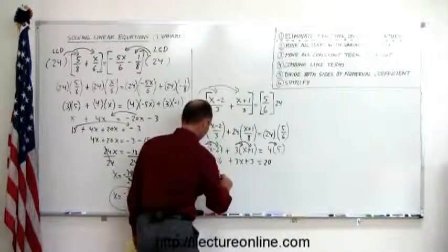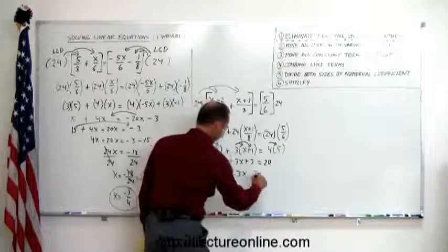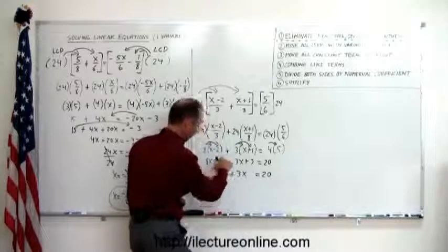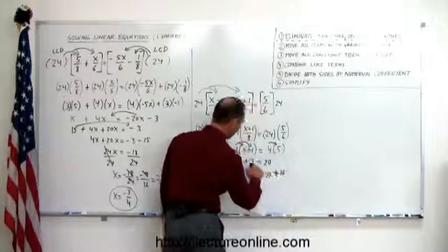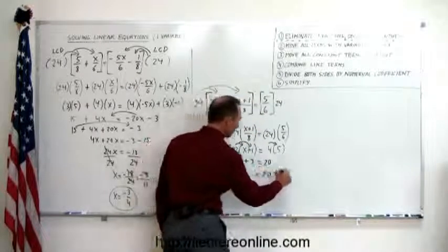So that becomes 8x plus 3x equals 20. So we move the minus 16 across, becomes a plus 16. And we move the plus 3 across, becomes a minus 3.